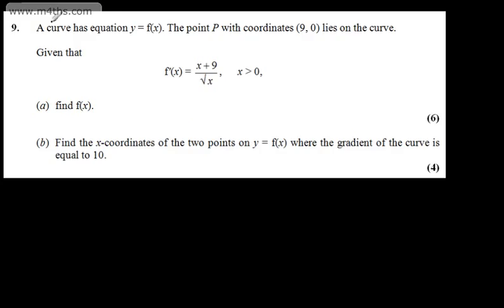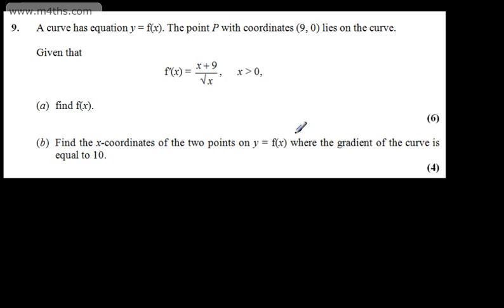This is question 9. We're told a curve has equation y equals f of x. The point P with coordinates 9 comma 0 lies on the curve. Given that f'(x) is equal to x plus 9 over root x, where x is greater than 0. In part A for 6 marks, find f of x, and in part B for 4 marks, find the x-coordinate of the two points on y equals f of x where the gradient of the curve is equal to 10.